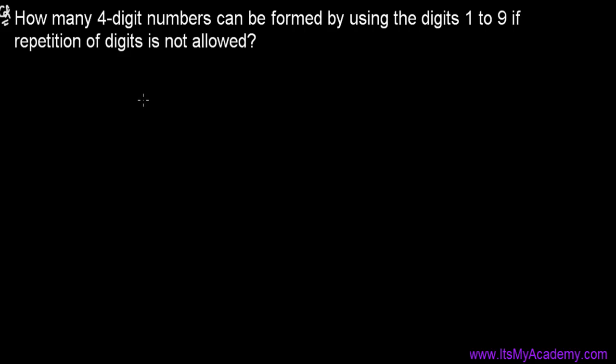Now let's do some exercises based on the formulas we learned for permutation and the theorems we learned - three very important theorems. Based on them, we're going to solve a few questions and that will give us a better concept. So the first question: how many four-digit numbers can be formed by using the digits 1 to 9 if repetition of digits is not allowed?